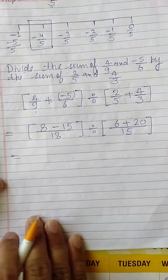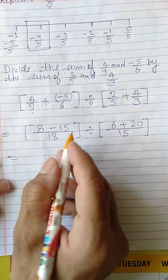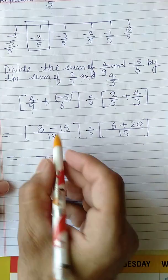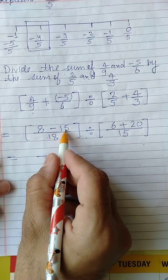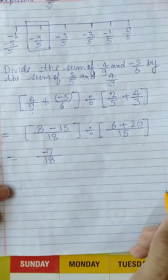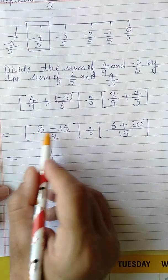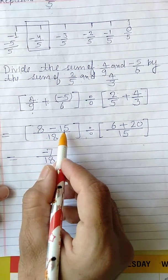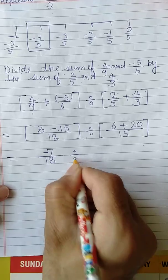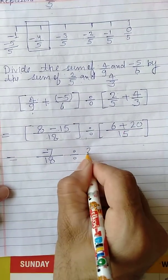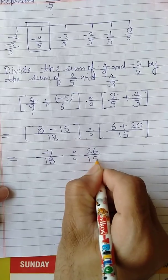Next step we are going to take: in this one 18 as it is, solve this. How to solve? 8 minus 15 is equal to 7 or minus 7. This is minus 7 because 15 is greater number. Different sign, they will be subtracted from each other. 7 will come, divide by this one. 20 plus 6 is equal to 26 upon 15.